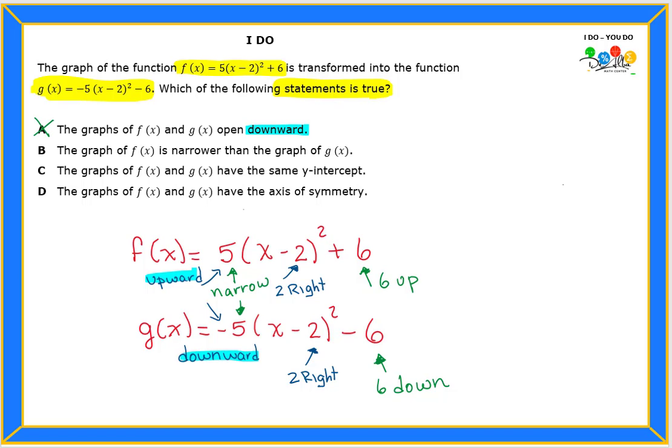What about B? What is one keyword that brings your attention? It says the graph of f(x) is going to be narrower than the graph of g(x). Is that true? Can we say one is narrower than the other one? And the answer is no, we agree they are both exactly the same wideness. So letter B cannot be my answer either.